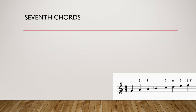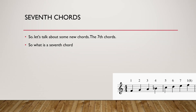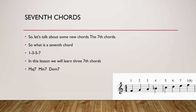In this lesson we will be all about 7th chords. So what exactly is a 7th chord? A 7th chord is where we not only have 3 notes but we add a 4th note — the 7th note: 1, 3, 5, and 7. In this lesson we will learn 3 seventh chords: the major 7th, the minor 7th, and the dominant 7th.